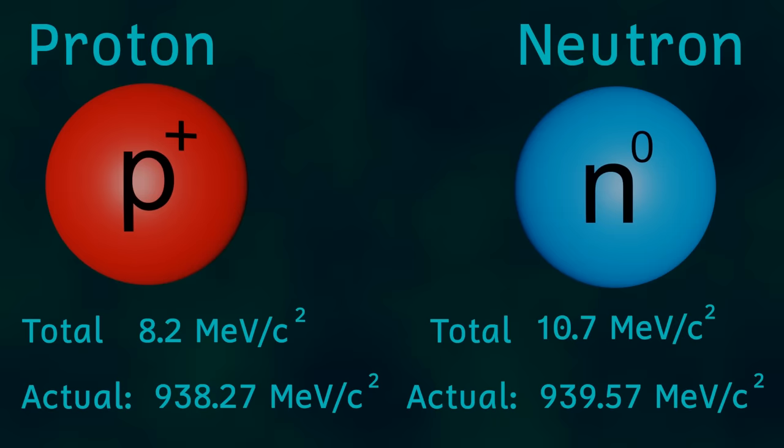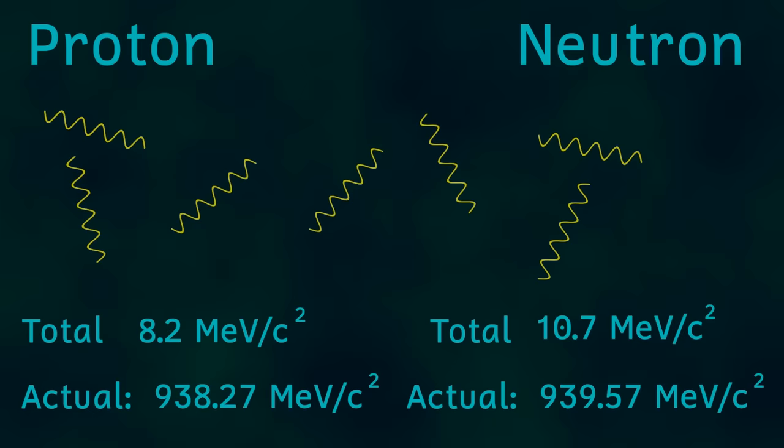Well then, surely the rest of the mass must come from the gluons that hold them together. Unfortunately, that isn't the case either. Gluons have no mass. So the answer to the missing mass must lie somewhere else. And it's quite a problem, as the missing mass isn't just a small fraction of the overall mass of the proton and neutron. The mass of the quarks only makes up about 1% of the mass of the proton and neutron. That means we have to account for the other 99%.